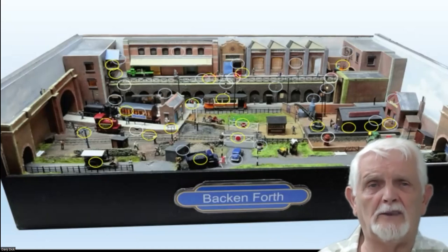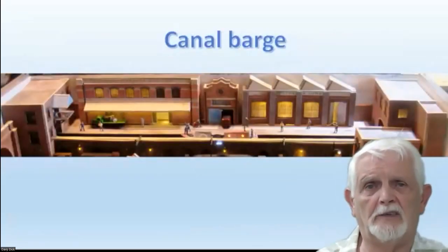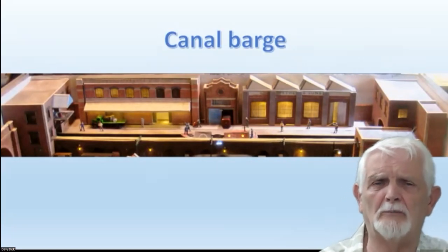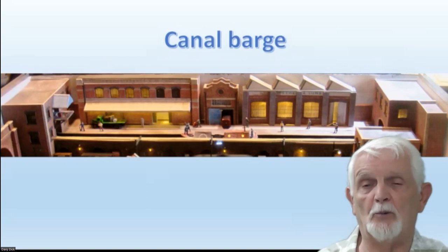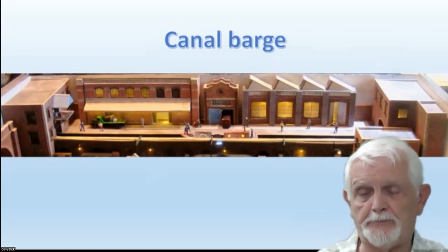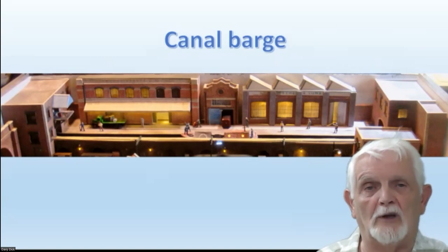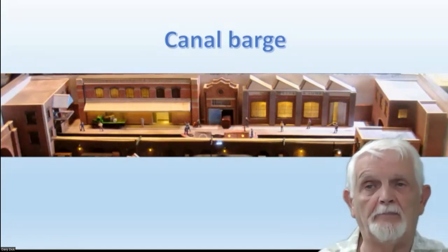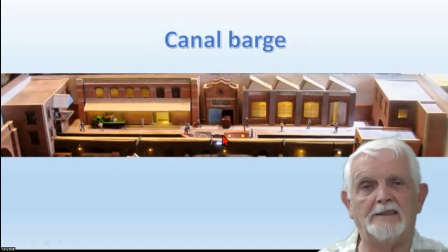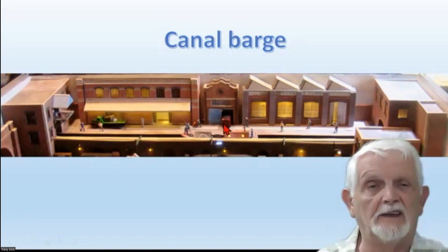Right, that's the background. Let's look at what we do, starting with the canal. Canal is quite an unusual feature. You don't often see a canal, certainly an animated canal in a layout, but we thought that would be an interesting extra. So we've got a barge and you can just see there that we have lights permanently illuminated in the barge. We'll explain that a bit later. It moves smoothly and slowly from left to right and back again and then stops in the middle and has activities along the way.